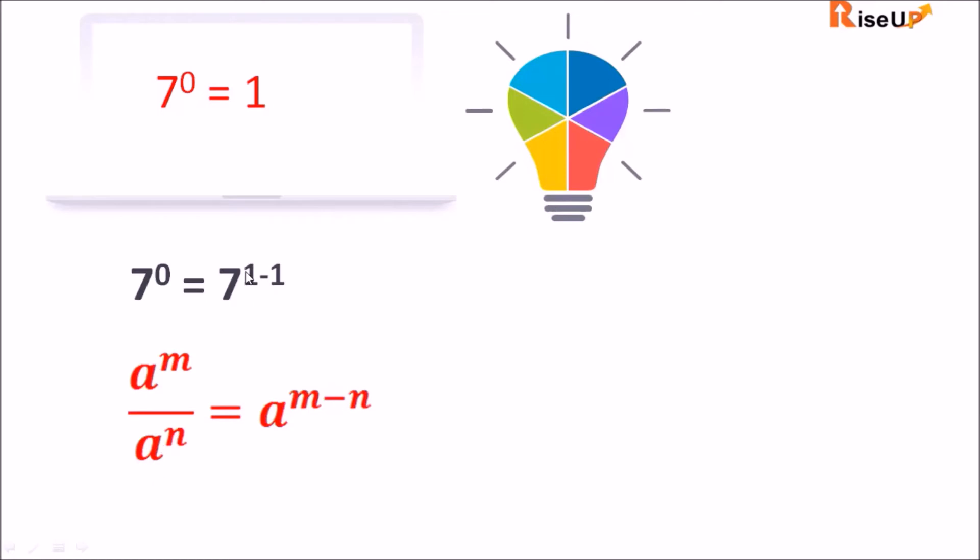So can I write 7 raised to power 1 minus 1 as 7 raised to power 1 upon 7 raised to power 1?